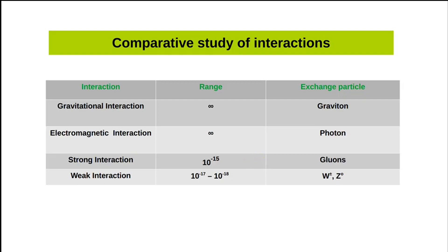For strong interaction, the range is about 10 to the power minus 15 meters, meaning strong interaction cannot be felt at distances greater than 10^-15 meters, and the exchange particles are gluons. For weak interaction, the range is about 10^-17 to 10^-18 meters, and the exchange particles are the W+, W−, and Z0 bosons.